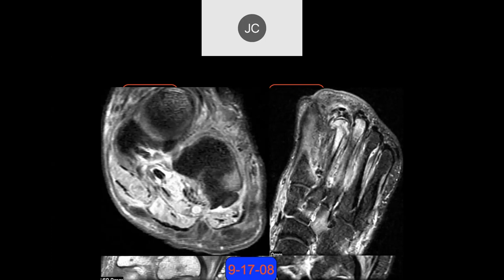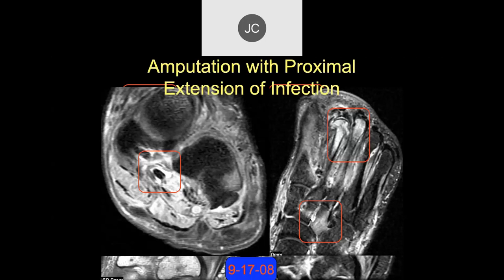With diabetic patients, the thing you really have to look for is evidence of proximal spread of infection. The classic problem with diabetes is that you do a distal amputation but don't get all the infection, then you keep amputating all the way to the knee. With MRI, you really need to see if there's any proximal progression of the infection.